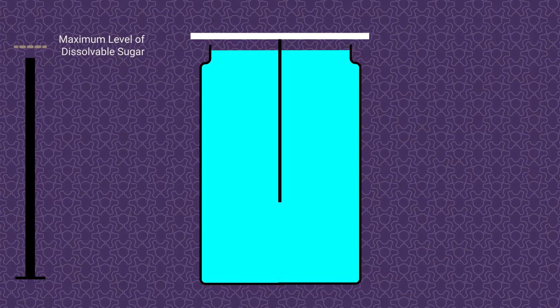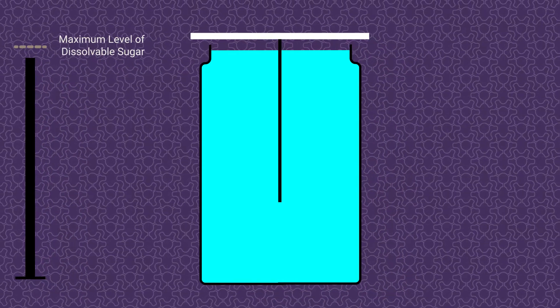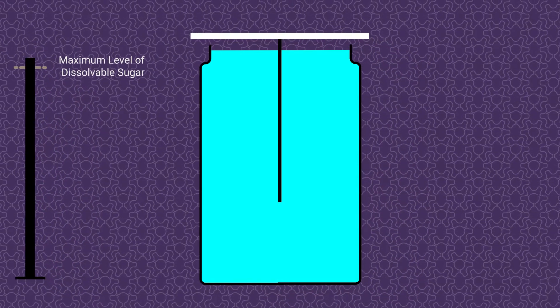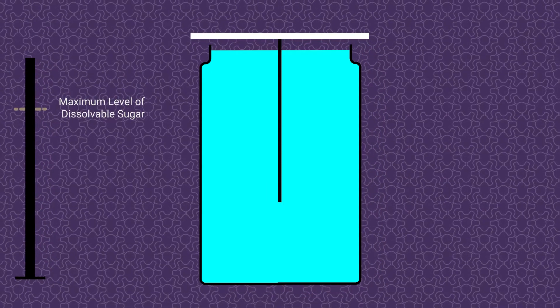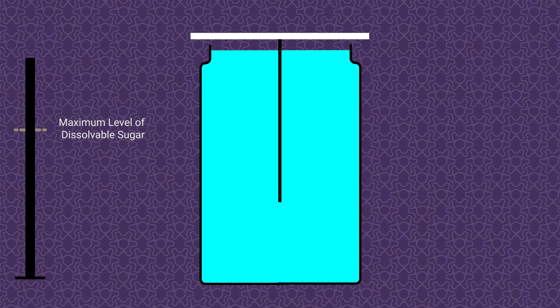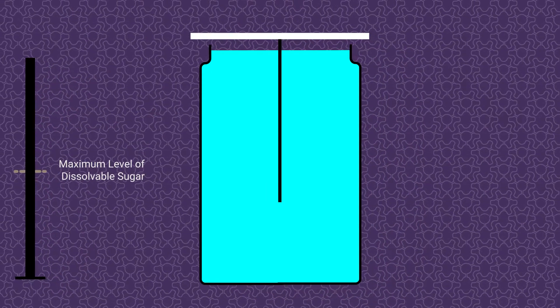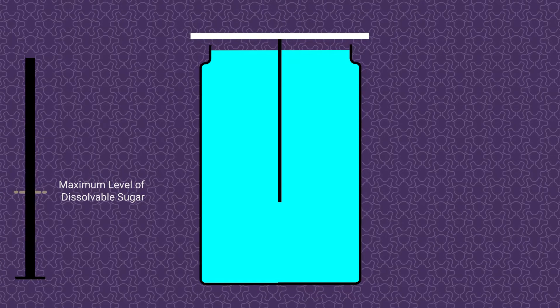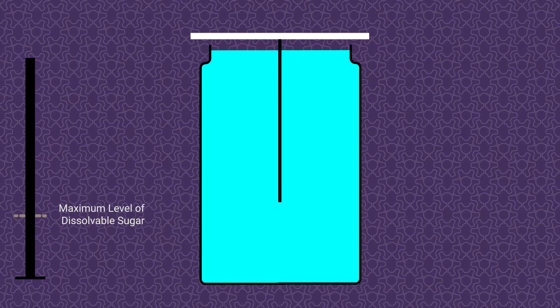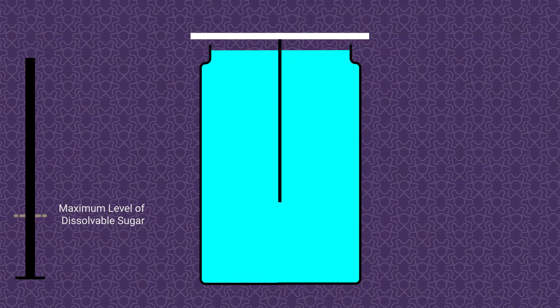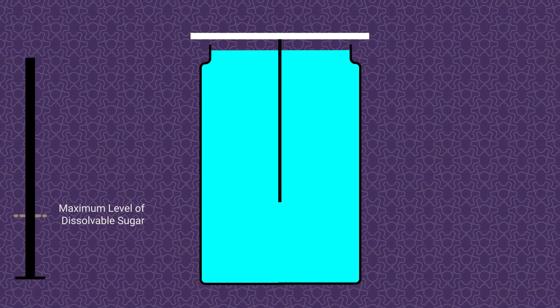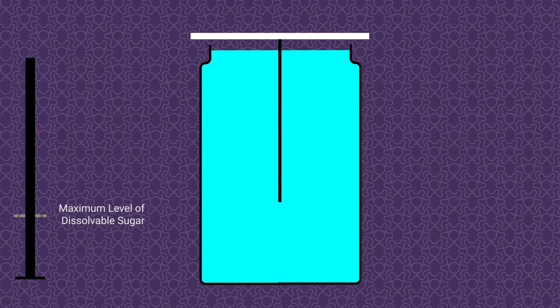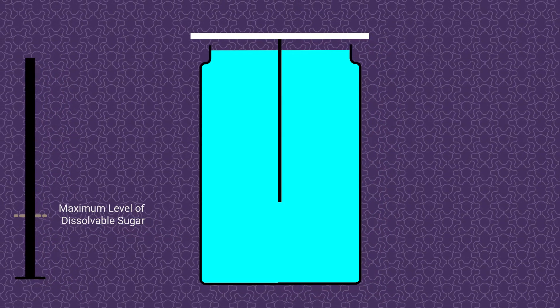First we need to talk about supersaturation. When the water cools down, the water can't hold as much sugar, which makes the solution supersaturated because there's more sugar than the water can hold. But even though the water has too much sugar, it still needs a place to put this extra sugar outside of solution. And this is called a nucleation site, and molecules will first solidify here.